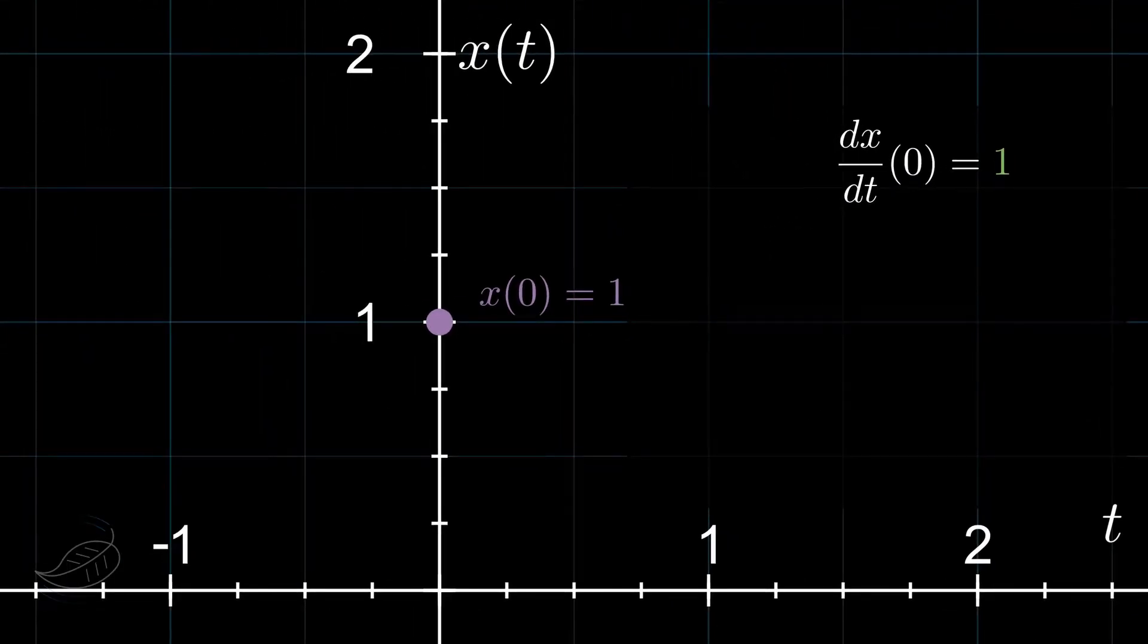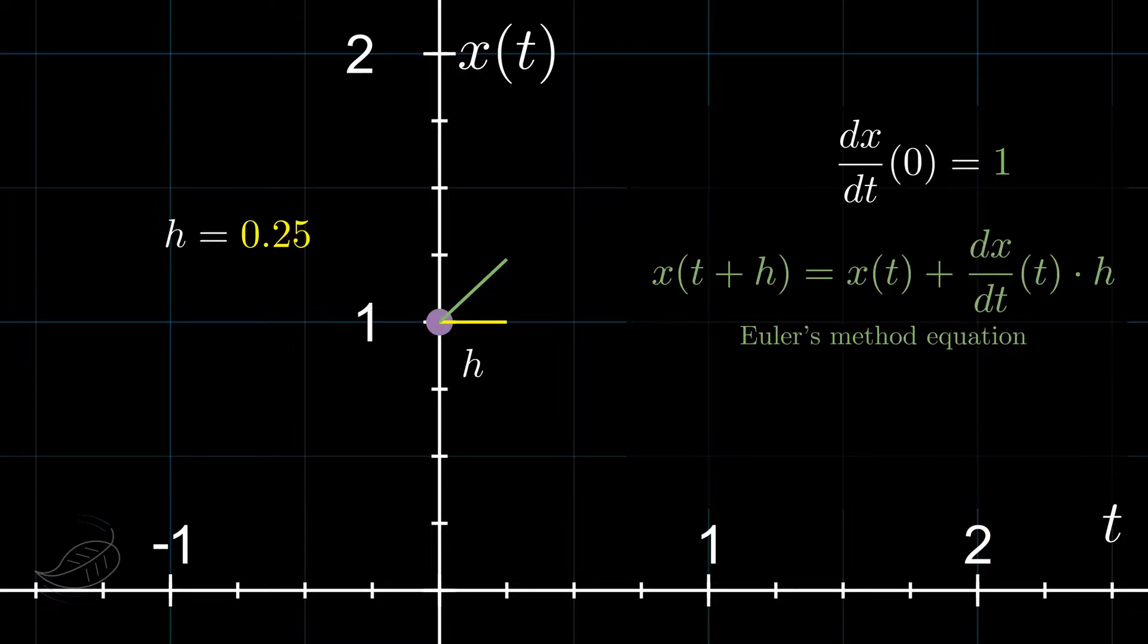So, what is the value of the function at a distance h to the right? Euler's method approximates x of t with a little straight line with the slope we just calculated. And this is the equation for the little green line.